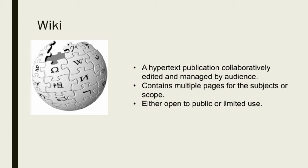Next is the wiki. A wiki is a hypertext publication collaboratively edited and managed by its audience. It also contains multiple pages for the subjects or scope, and is either open to the public or limited in use. A wiki engine, which is a type of content management system, differs from other web-based systems like blog software, in that content is created without a clear owner or leader. There are also various engines where we can gather lots of information with strong and reliable sources and references.